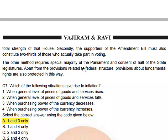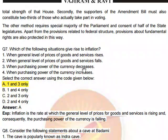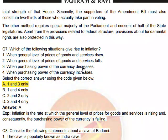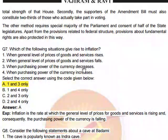Which of the following situations give rise to inflation? When the general level of prices of goods and services rises — correct. When the purchasing power of the currency decreases — correct. When purchasing power increases — not correct. So statements one and three only are correct. Inflation is the rate at which the general level of prices of goods and services is rising, and consequently the purchasing power of currency is falling.